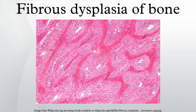Fibrous dysplasia is an abnormal bone growth where normal bone is replaced with fibrous bone tissue. It causes abnormal growth or swelling of bone. It can occur in any part of the skeleton, but the bones of the skull, thigh, shin, ribs, upper arm and pelvis are most commonly affected.